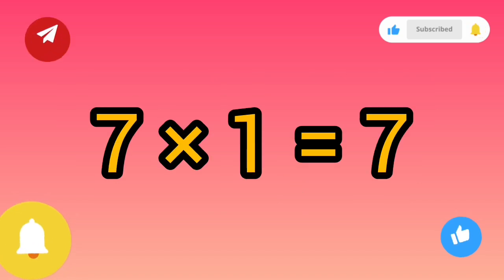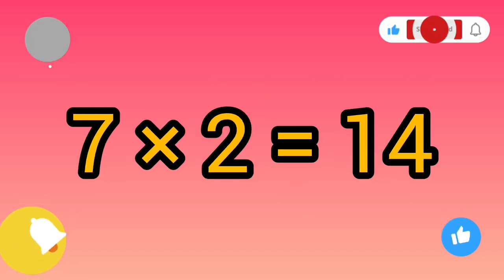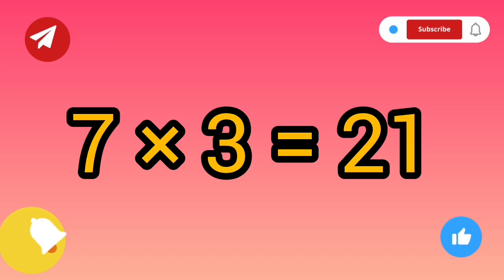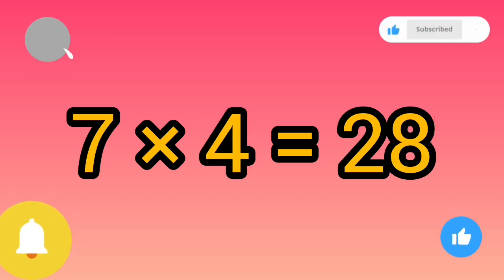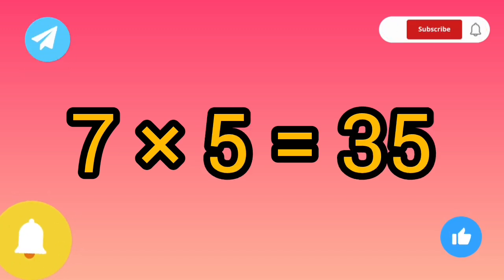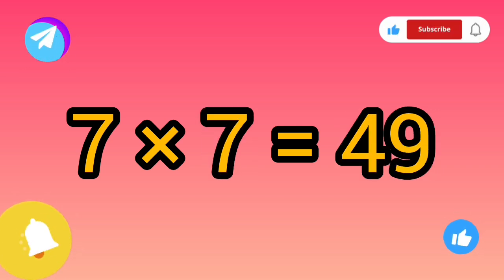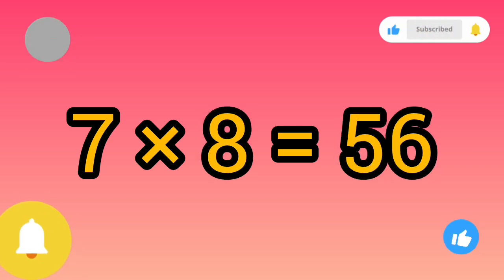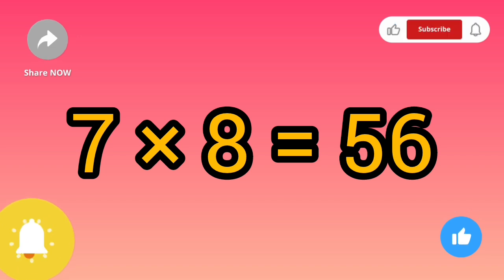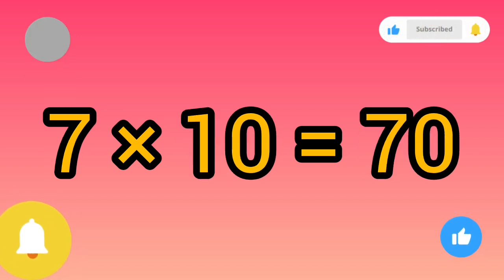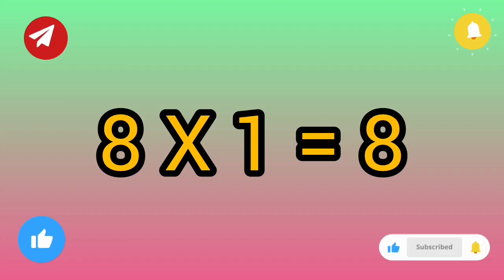Seven ones are seven, seven twos are fourteen, seven threes are twenty-one, seven fours are twenty-eight, seven fives are thirty-five, seven sixes are forty-two, seven sevens are forty-nine, seven eights are fifty-six, seven nines are sixty-three, seven tens are seventy.